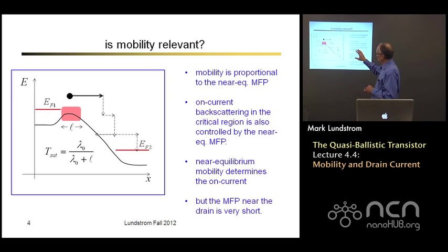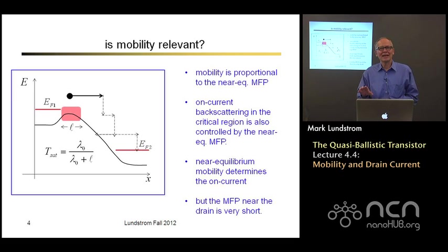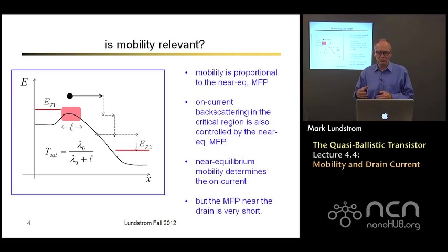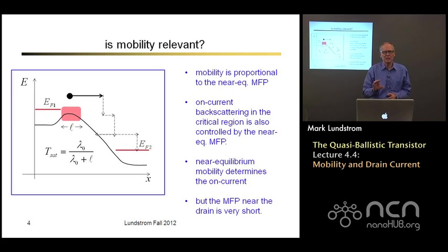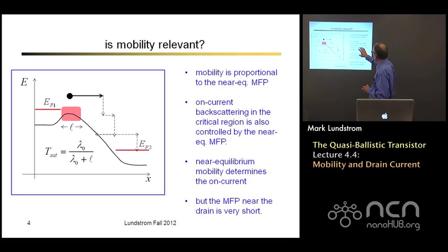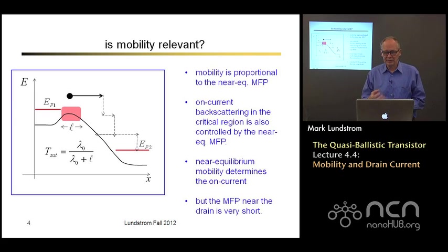But there is a way to think about how mobility might have physical significance here. The mobility is proportional to the near-equilibrium mean free path. The classic expression is Q·τ/M, but instead of expressing mobility in terms of scattering time, we can re-express it in terms of the mean free path. Now, the on-current in a device under high bias is determined by back-scattering in the critical region near the top of the barrier — the area we've been calling the virtual source — where electrons have not yet gained much kinetic energy and are close to equilibrium. So back-scattering is also determined by the near-equilibrium mean free path, and we can conclude that near-equilibrium mobility is really what's limiting or determining the on-current.